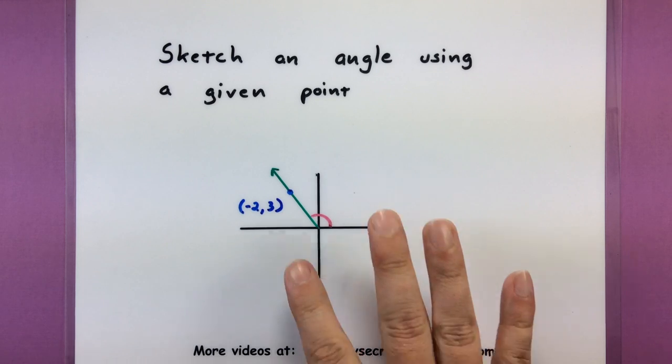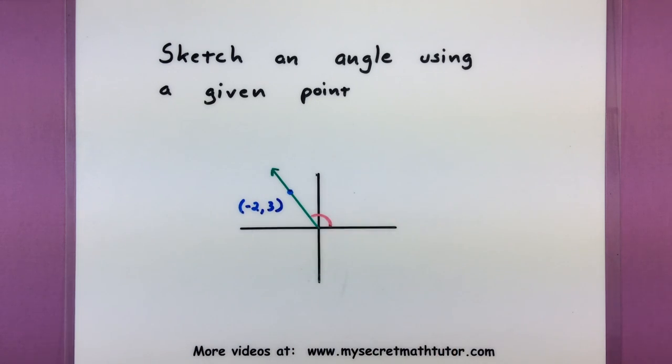So the idea here is that we're going to be given some sort of point and I'm going to show how it connects to some sort of angle on a coordinate axis simply by sketching it out. I've got a little bit more time maybe we'll go ahead and figure out more information about that particular angle.